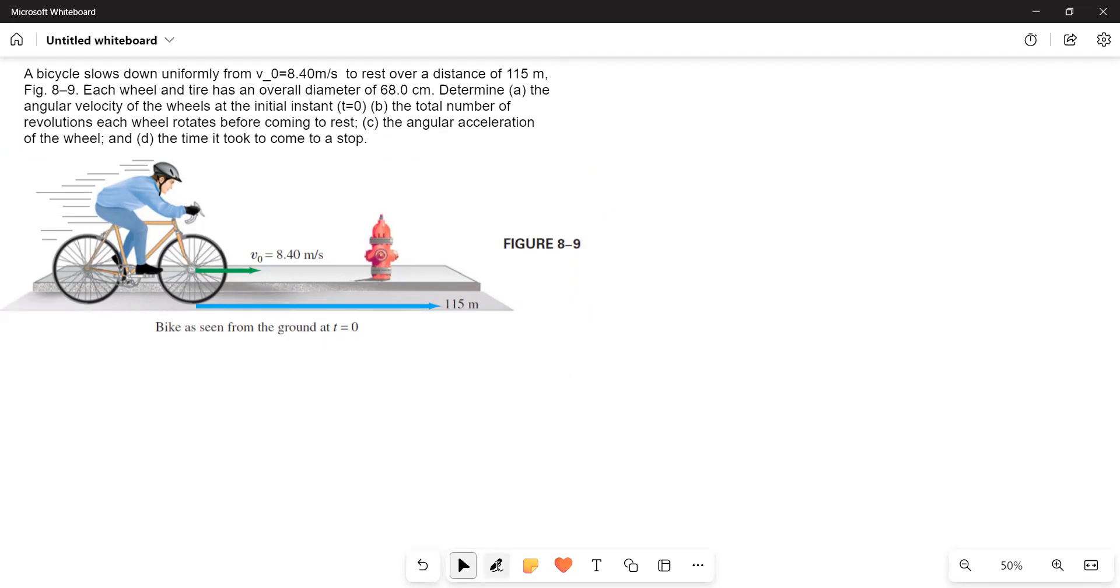The initial velocity is given to us: Vᵢ = 8.4 m/s, and the distance and diameter are given. Diameter d = 68 cm = 0.68 m. Therefore, radius r = d/2 = 0.68/2 = 0.34 m.